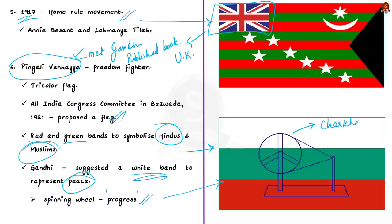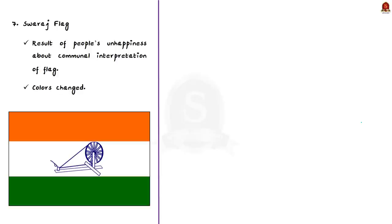Some people were not happy with the communal interpretation of the national flag. So keeping this in view, a new flag was designed where the tricolour aspect and charka were retained, but only the colours were changed to saffron, white and green. This flag with the charka in the middle is also called the Swaraj flag. And after this came our current national flag.